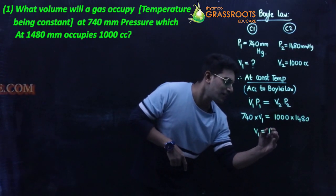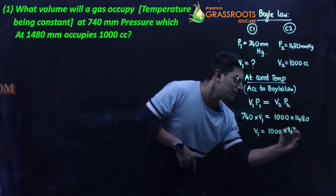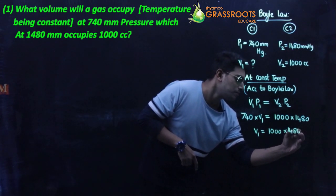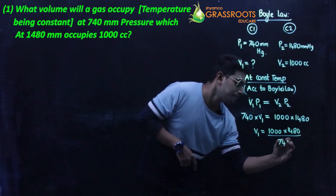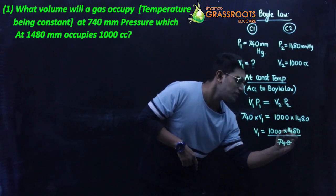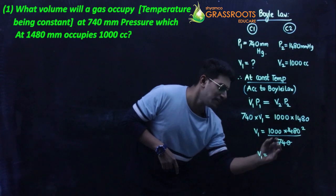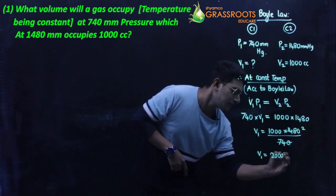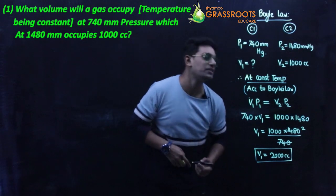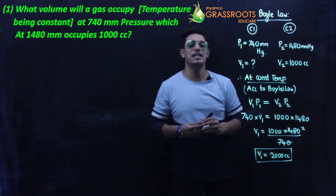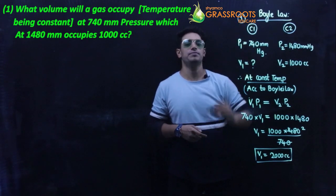You get V1 = (1000 × 1480) / 740, which gives V1 = 2000 cc (cubic centimeters). That's the first question based on Boyle's law.